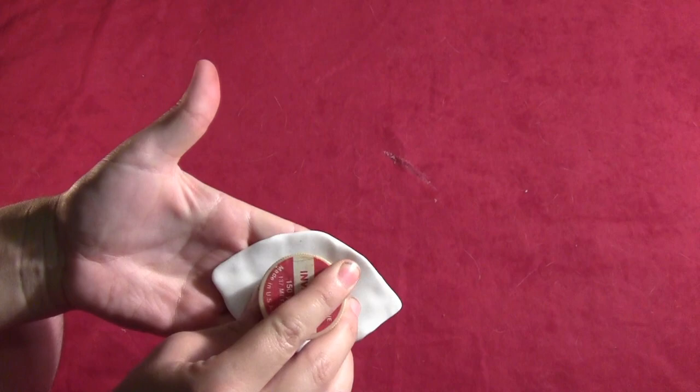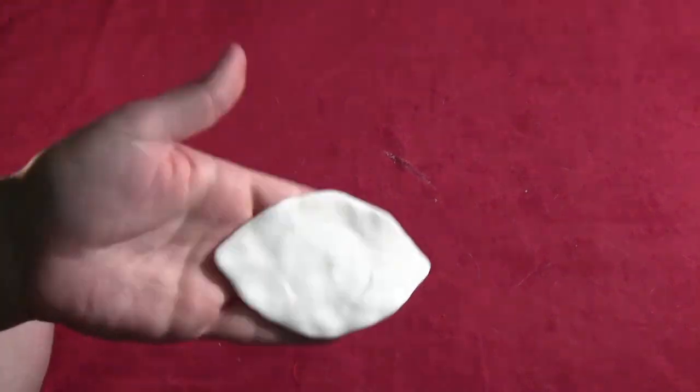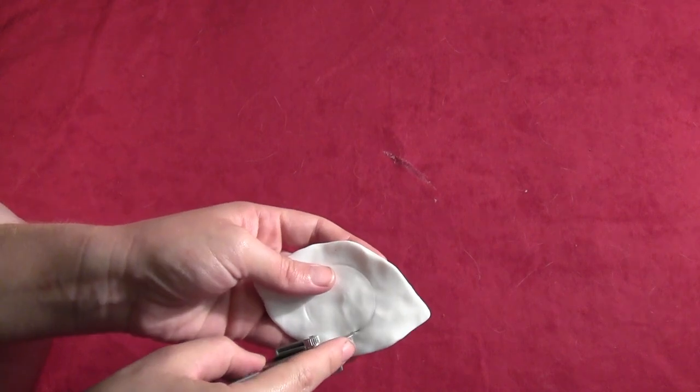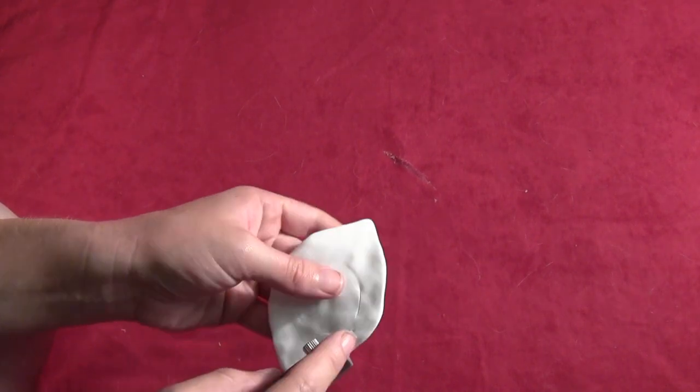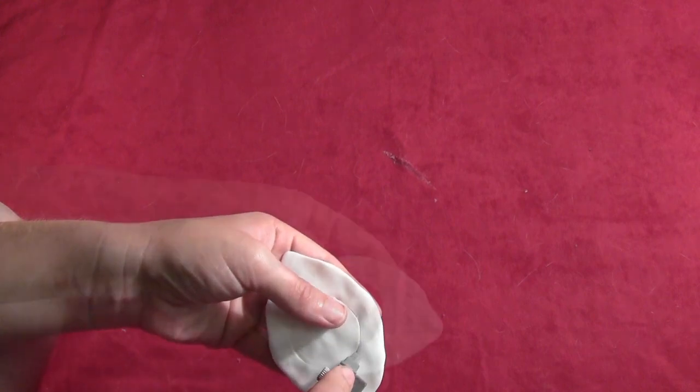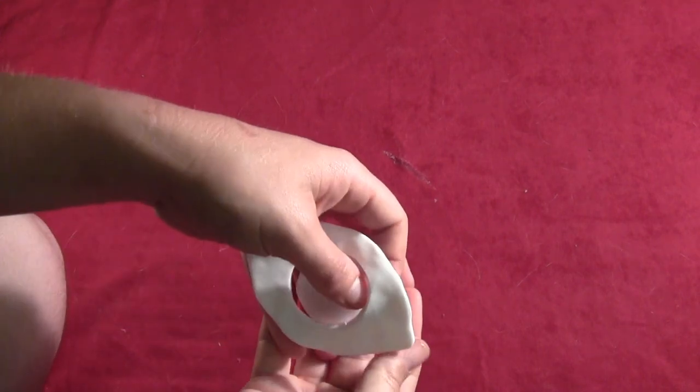So then just take something round and make a circular indentation on one of the eyepieces. And then just use an exacto knife or something similar to go around the circle and cut it out. You want to cut all the way through so you can just pop the circle out. Just like that.